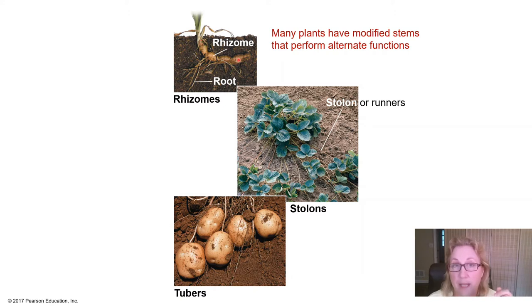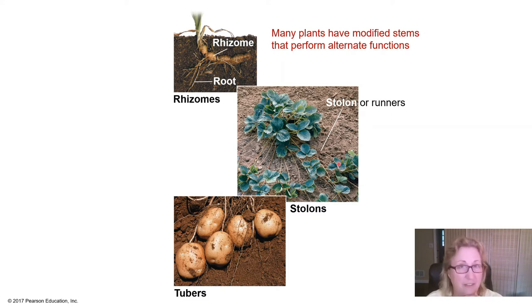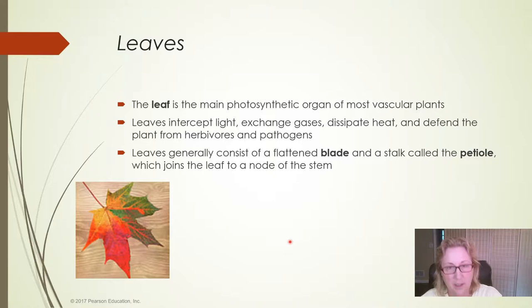Underground stems can allow the plant to reproduce vegetatively or non-sexually. The same is true with runners or stolons — as in a strawberry plant, where all the little new plants growing from the runners are identical genetic clones of the parent plant. These are modified stems. Modified stems can also be for storage of carbohydrates, as in onions.